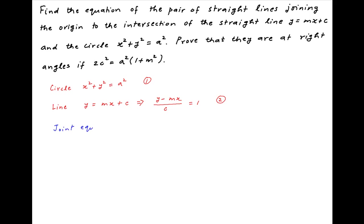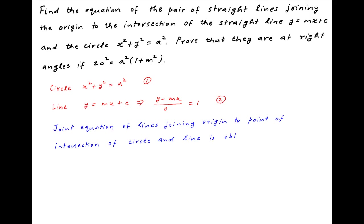The joint equation of the pair of straight lines joining the origin to the points of intersection of the line y = mx + c with the circle x² + y² = a² is obtained by making equation 1, which is the equation of the circle, homogeneous of degree 2 using equation 2.